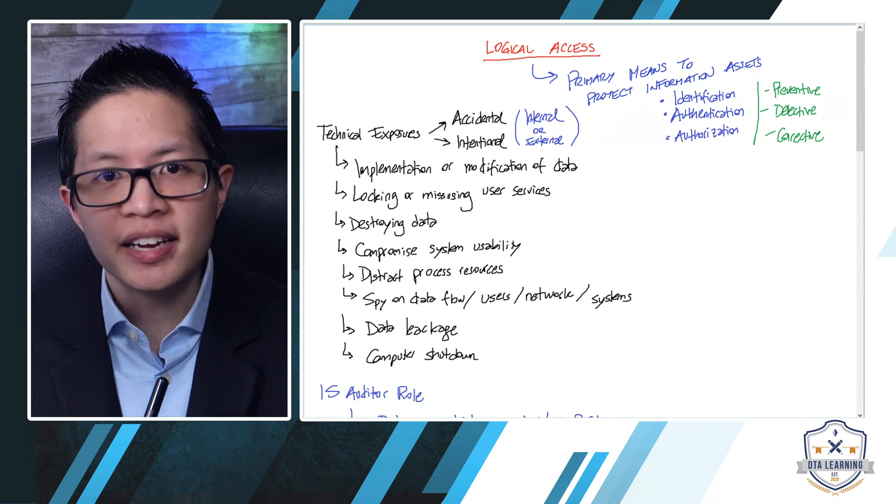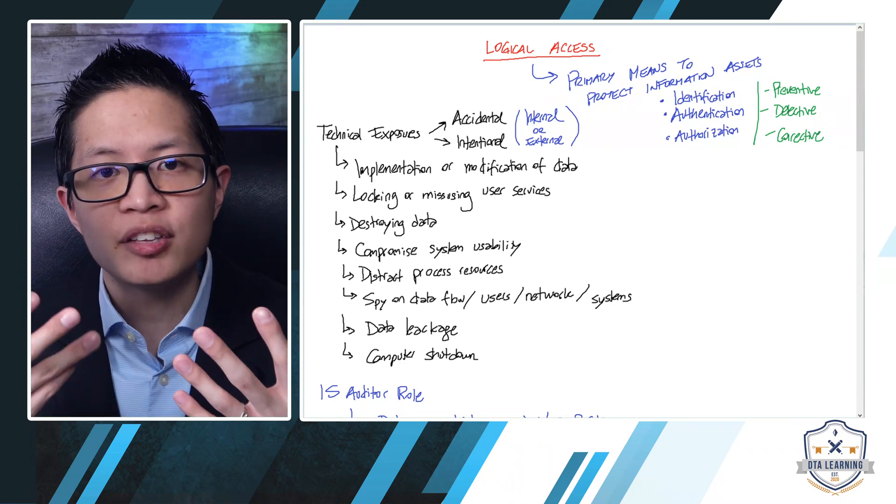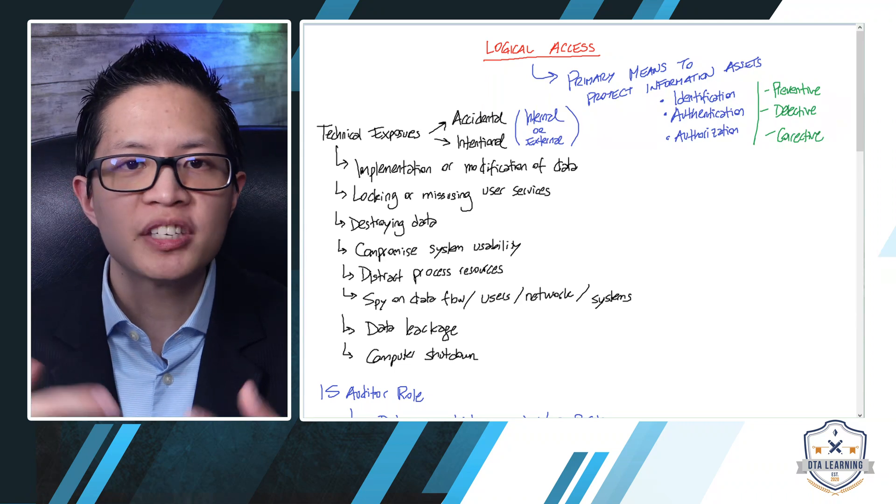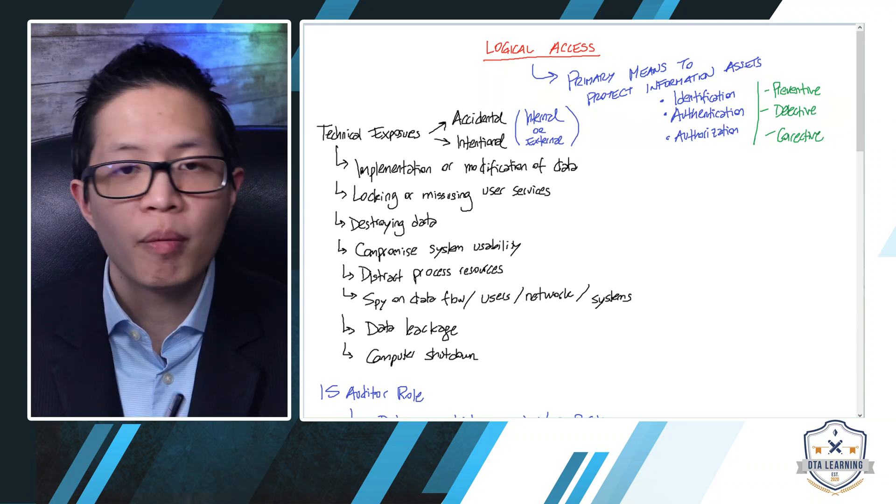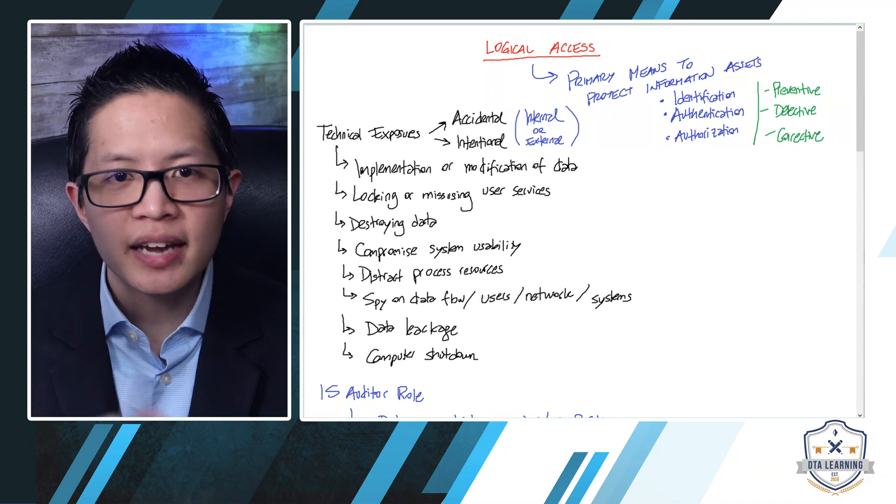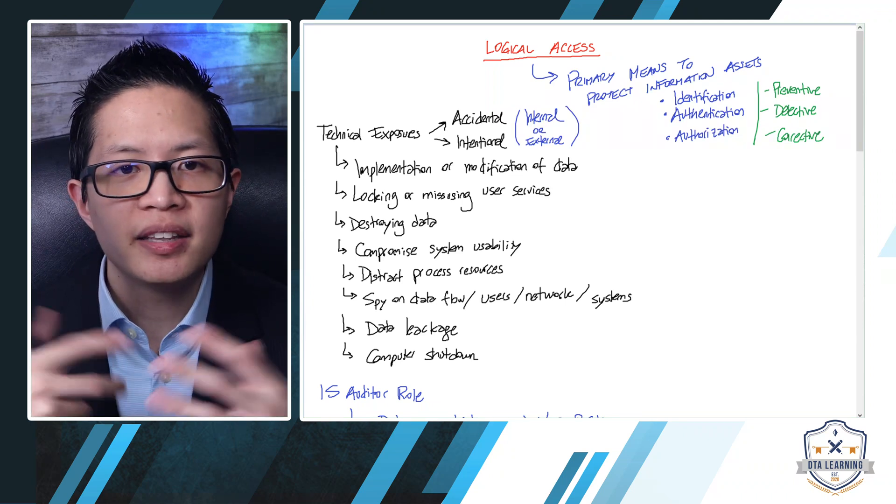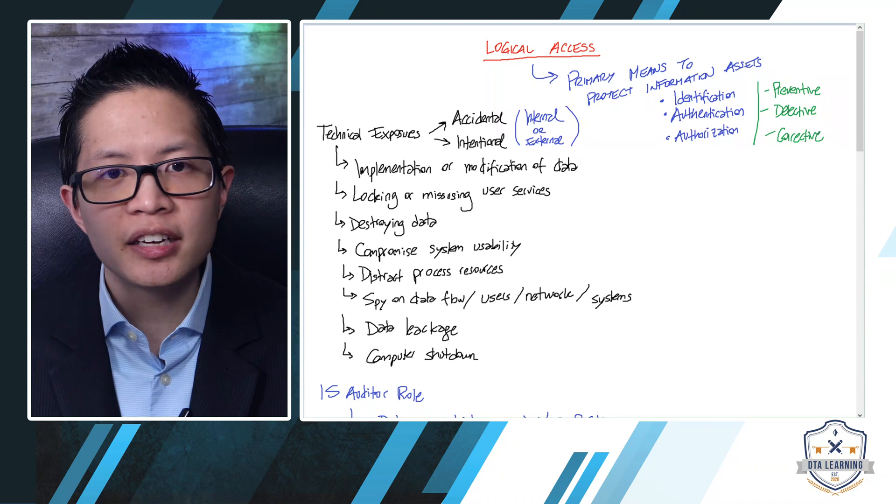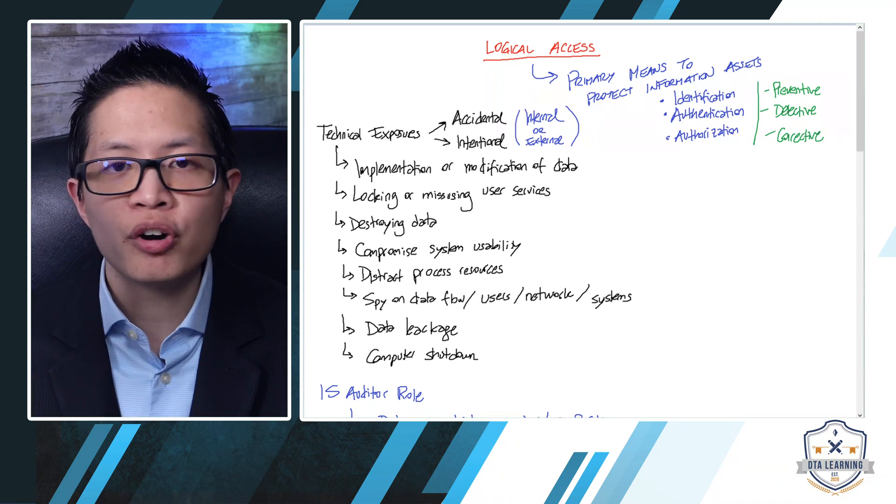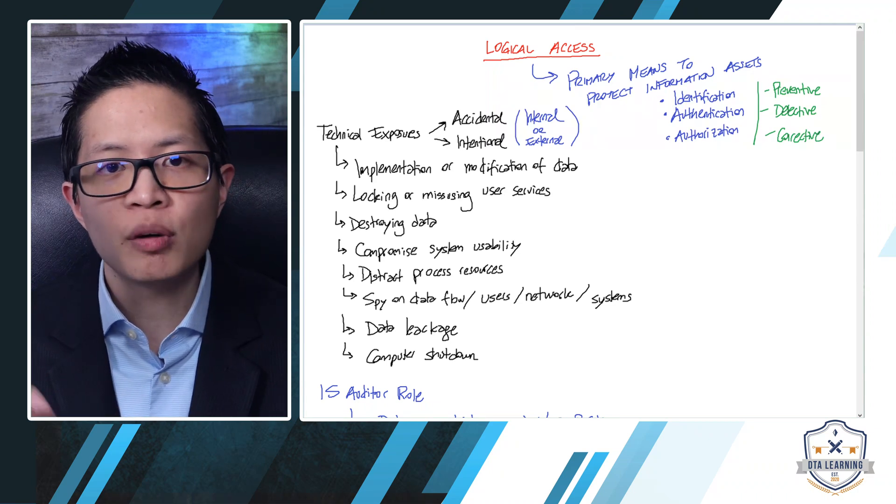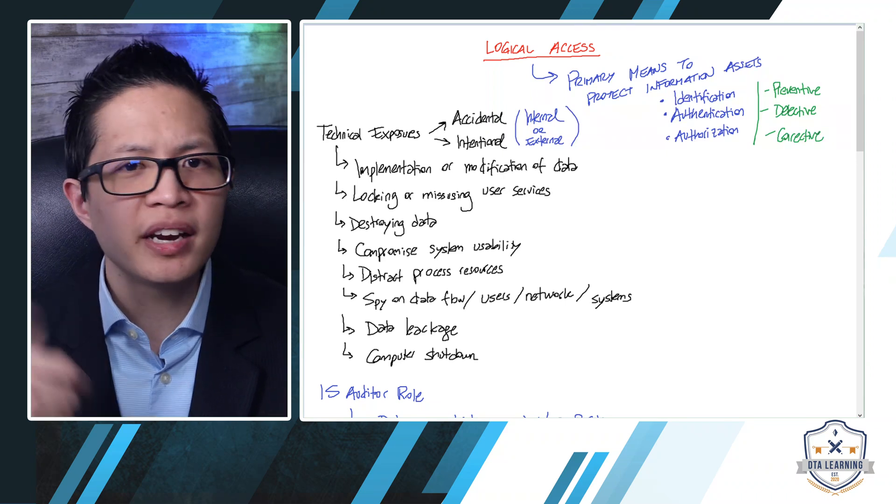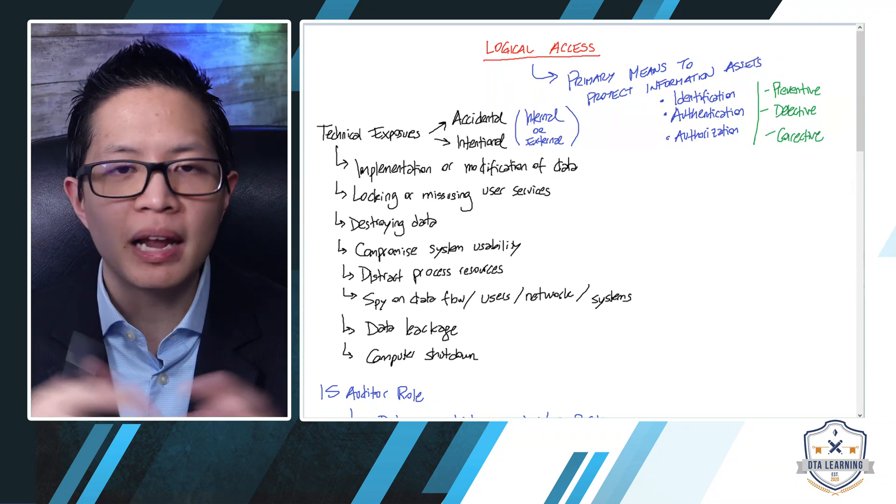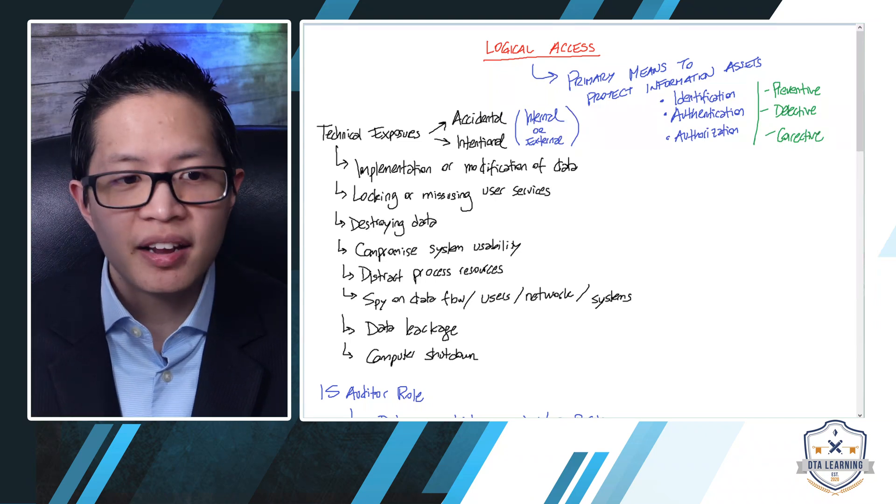Data leakage. The interesting part of data leakage is that sometimes they don't leave any trace, depending on what type of systems you have in place. So it could go undetected for many, many years. A lot of cases over there where companies didn't realize data has been leaking until months or years, when actually someone else, potentially competitors or clients, tell them, hey, your data is out there on the internet, been sold in the black market. They didn't even know about it.